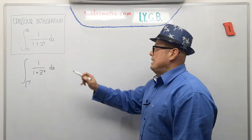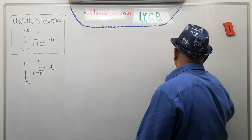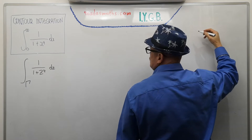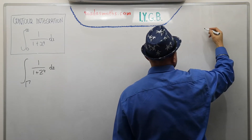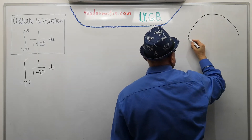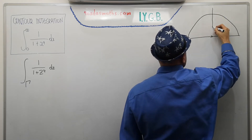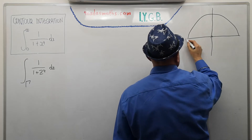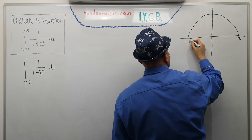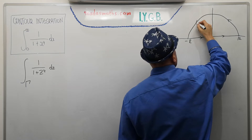Because of the limits being zero to infinity, we're going to use the standard semicircular contour — a standard semicircle centred at the origin on the top half, with radius r, so that's r and minus r. It will run in an anticlockwise direction. That's our gamma.